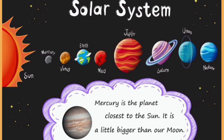Mercury. Mercury is the planet closest to the sun. It is a little bigger than our moon.